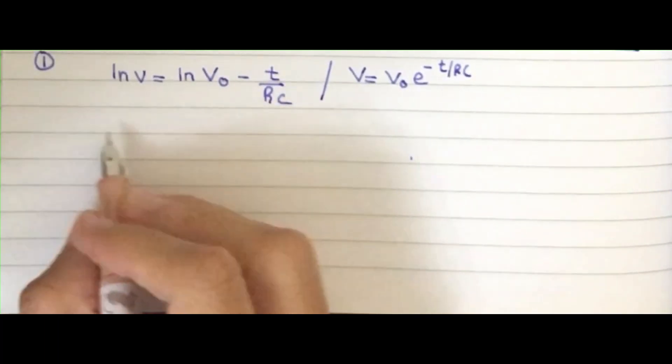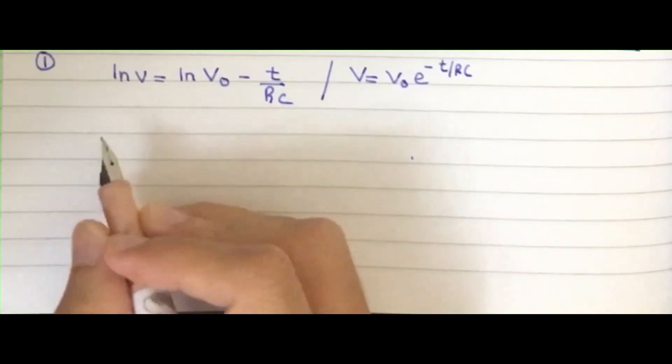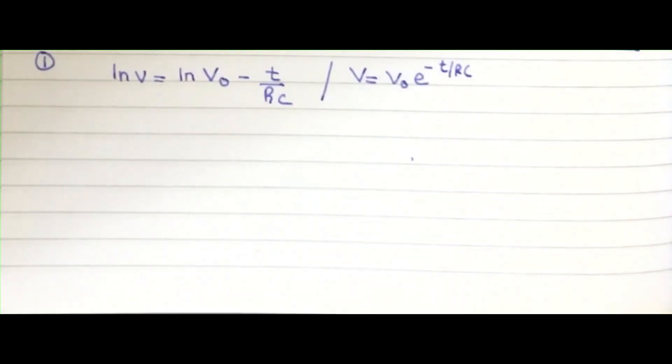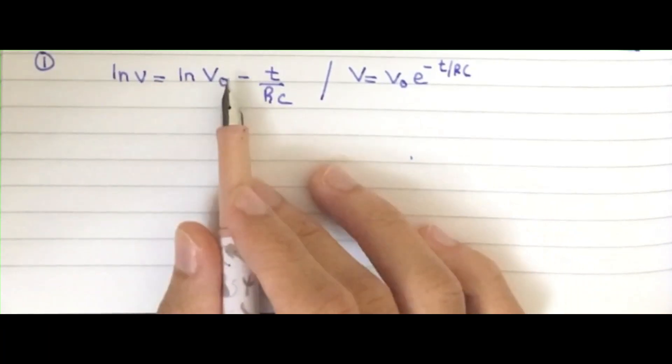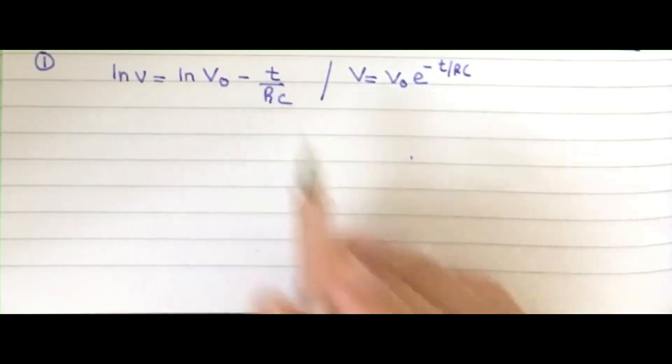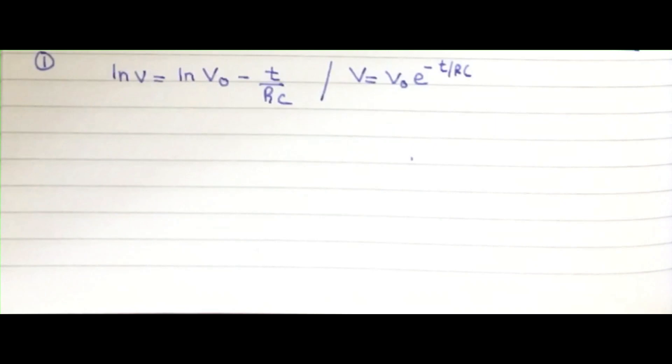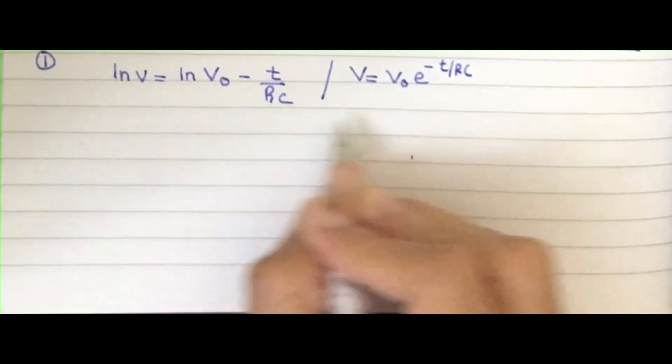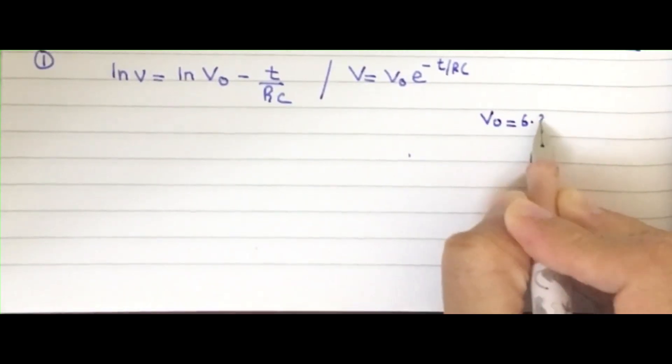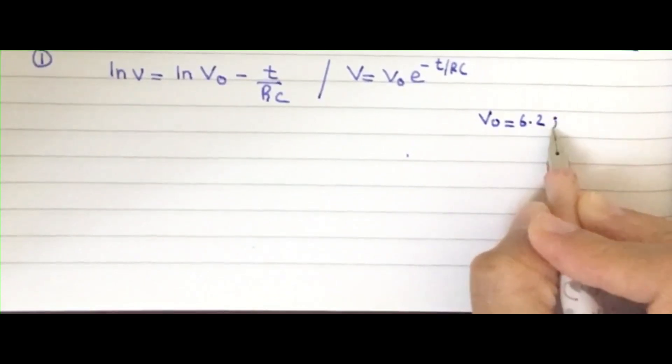To find this, you have been given a graph, so you have to take pair points. I'm going to take two pair points. One will be the V initial and one with a V with a time. My V initial is 6.2 and my time for it is 0 seconds.